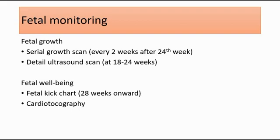Fetal monitoring is also important during the pregnancy. Fetal growth monitoring is done using serial growth scans and detailed ultrasound scans. Serial growth scans are done every 2 weeks after the 24th week to check for the growth velocity of the baby, helping the doctor assess fetal parameters, estimated fetal weight to rule out macrosomic baby or intrauterine growth restriction, and also to assess the amniotic fluid index to rule out polyhydramnios.